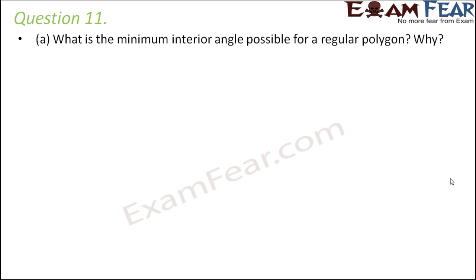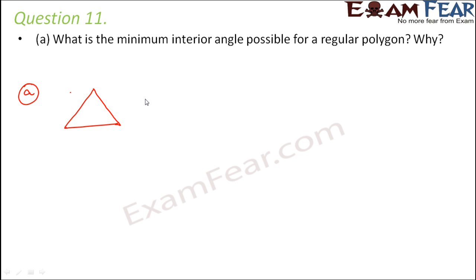Question number 11: What is the minimum interior angle possible for a regular polygon? Before we think of the measure of that minimum interior angle, first let us decide what are the minimum number of sides needed to form a polygon. A polygon is a simple closed curve. One line segment is not enough, two is also not enough because we do not form a closed curve. So minimum we need three line segments — that is a triangle. Therefore, the minimum number of angles is also three.